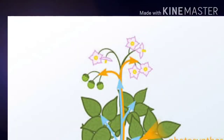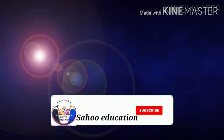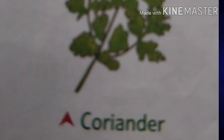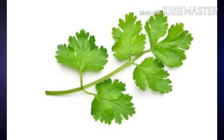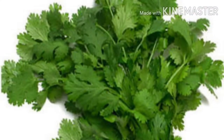Stems are of different kinds. First, a Coriander plant has a soft and green stem. You all eat coriander leaves — its stem is very soft and green.